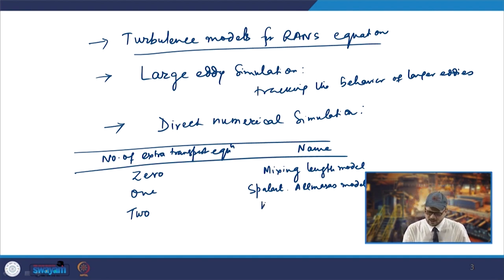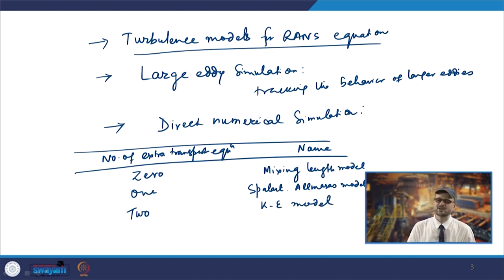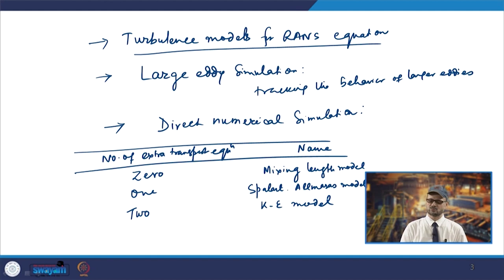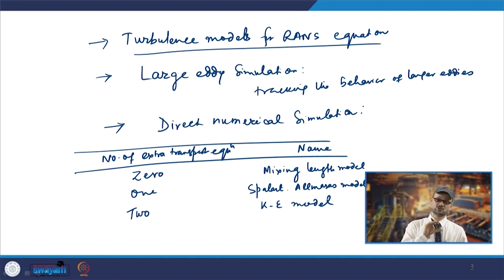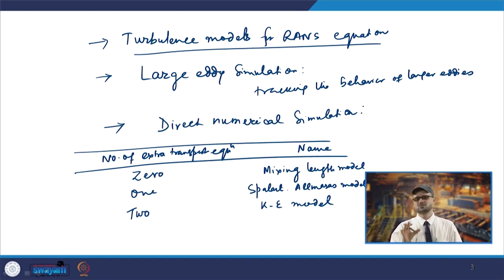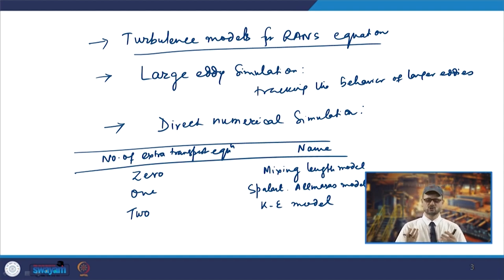In the k-epsilon model you have turbulent kinetic energy and the dissipation of kinetic energy equations. These two terms are solved, and using the values of k and epsilon you obtain the stress values through parameters like ν_t.